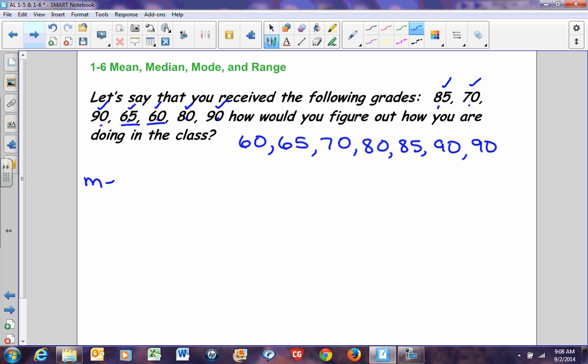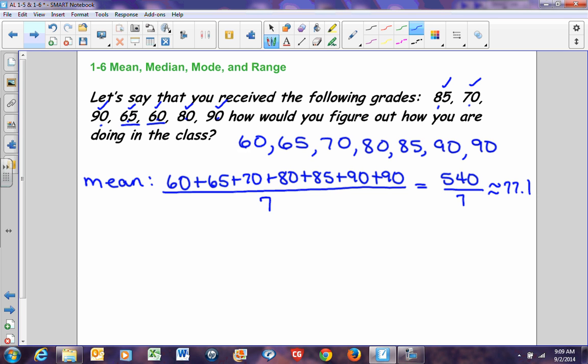So if I want to find my mean, my mean is found by adding up all my data values and dividing by the number of data values. So I'm going to add up all my data values: 60 plus 65 plus 70 plus 80 plus 85 plus 90 plus 90. If you show the work just like I just showed it here, I will allow you to use a calculator because this can get fairly cumbersome. When we add all of this up, this equals 540. There were seven data values, so we're going to take that and divide by seven. If I take 540 and I divide it by seven using my calculator, I get 77.1428, or approximately 77.1. So there is my mean.